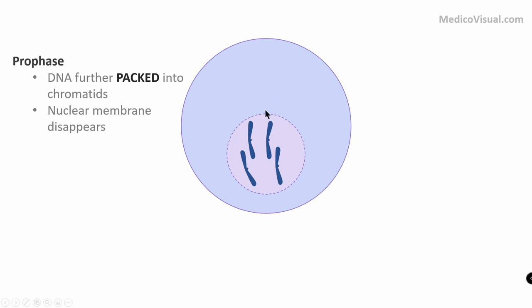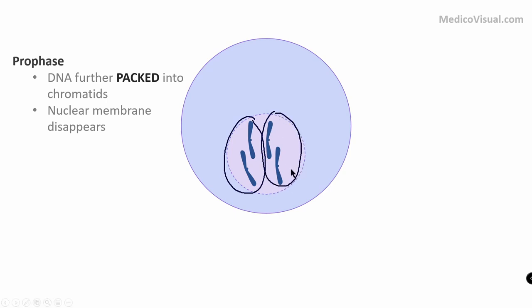We have 46 double helical DNA molecules in each cell, arranged in the form of chromatids. If we simply divided these chromatids so that half go to one cell and the other half to another, each cell would have half the number of chromatids and half the DNA. This should not happen in mitosis.